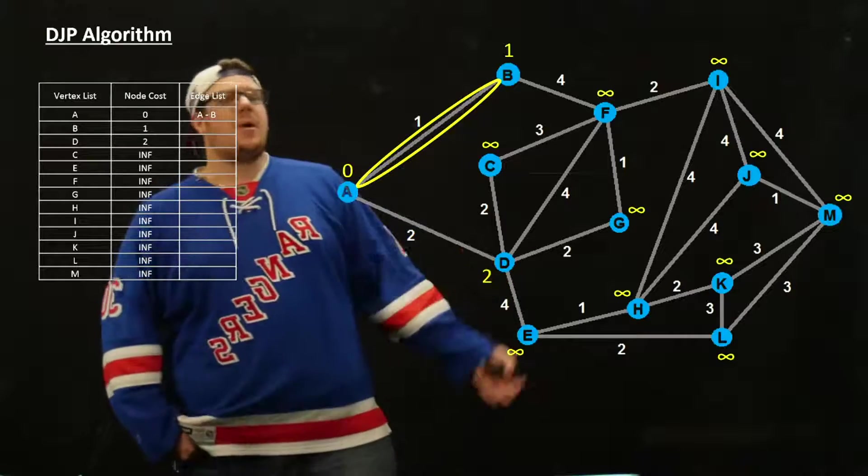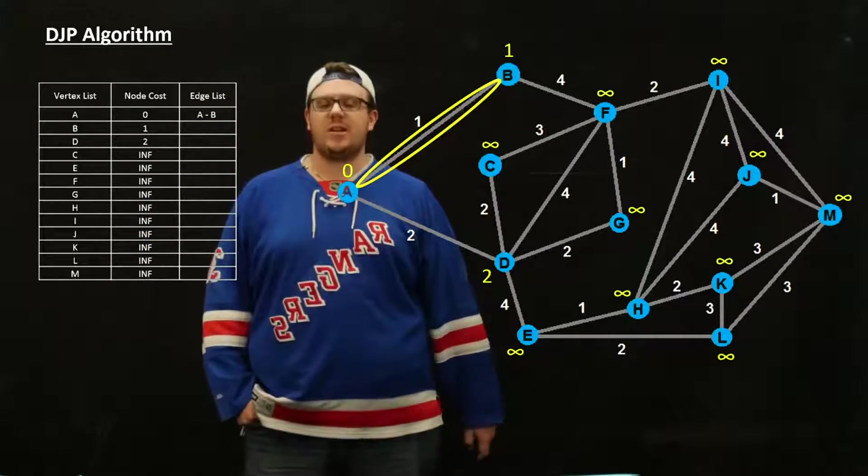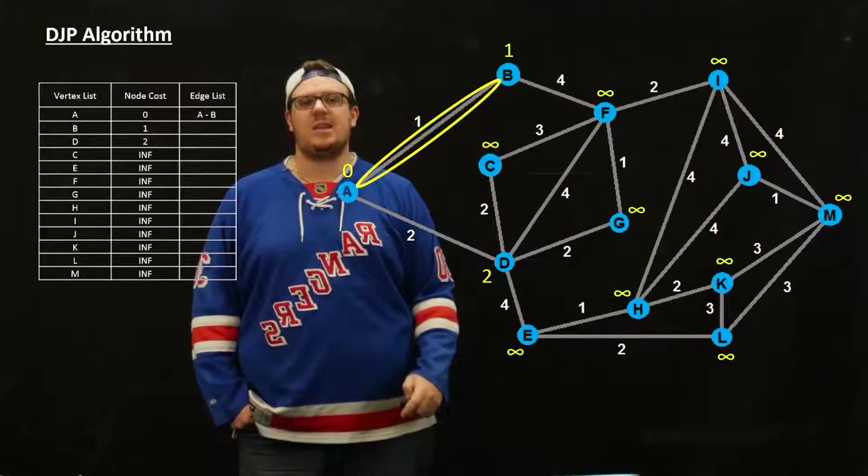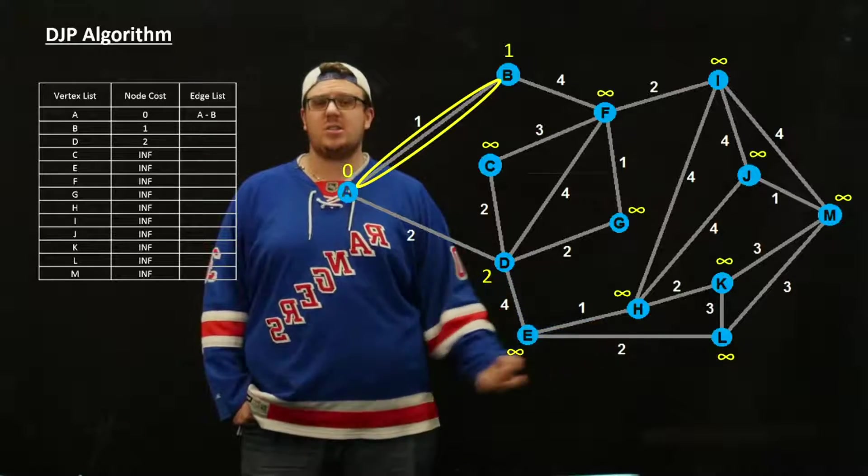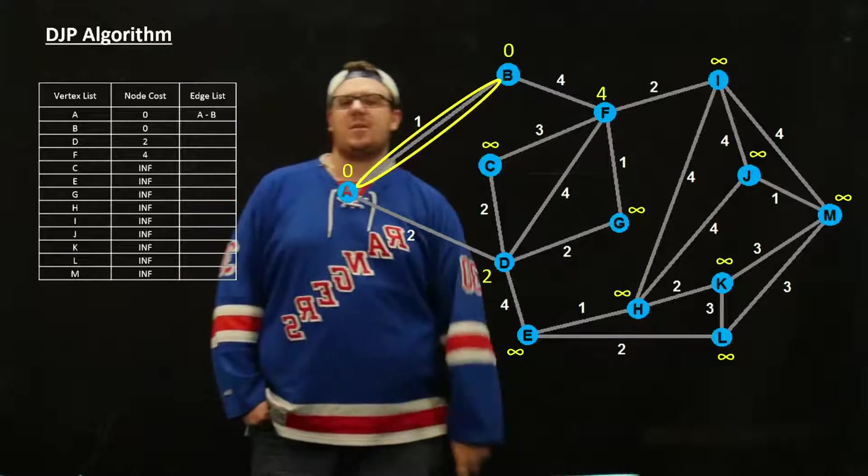We're going to repeat that process from now on. We've added B to our tree, so we're going to update that to zero. And then we're going to update F because that is the next one that is closest to something in our tree. B is updated to zero, and F is updated to 4.